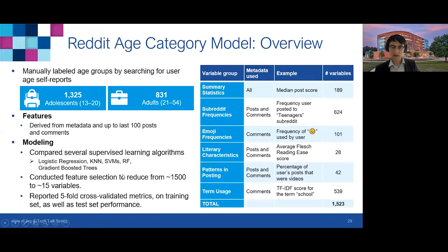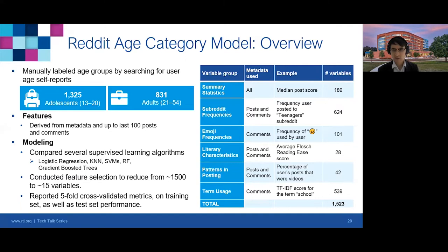To make this process more concrete, we'll go into some details of the Reddit age classification model. To get labeled data, we searched for instances where Reddit users self-reported their age in their profiles, posts, or comments, then manually reviewed these accounts to confirm that self-reports are plausible. While this approach produced high-quality labels, one drawback is that if users who self-report age are systematically different from those who don't, the model isn't guaranteed to generalize well. In practice, we mitigate this by limiting predictions to accounts similar to the training data, or for which the model is relatively more confident.